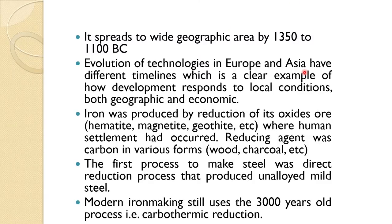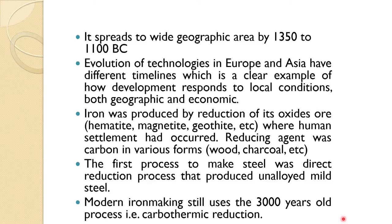Once the iron age started, it spread to wide geographic areas by 1350 to 1100 BC. The evolution of technology in Europe and Asia had different timelines, which is a clear example of how development responds to local conditions — both geographic and economic. It is a human settlement where this technology developed. Iron was produced by reduction of its oxides — hematite, magnetite, goethite, siderite, and others — with carbon in various forms such as wood or charcoal as the reducing agent.